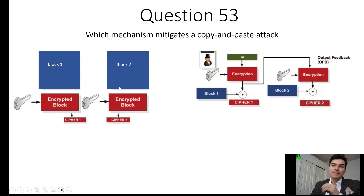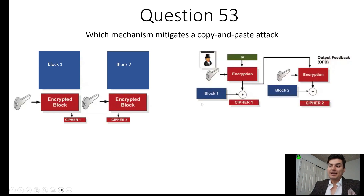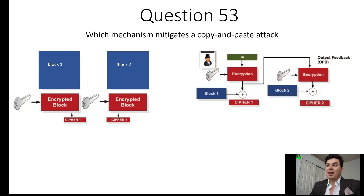With electronic codebook (ECB), if the same data appears in block two and they're using the same encryption, they'll be able to reveal the encryption algorithm by constantly resending and receiving those encrypted messages. Now, output feedback (OFB) introduces the initialization vector. So even if you have the same input, the outputs will be completely different in the ciphers because of the initialization vector. Output feedback mode mitigates the copy-and-paste attack because of the randomness the initialization vector creates between each block of data.